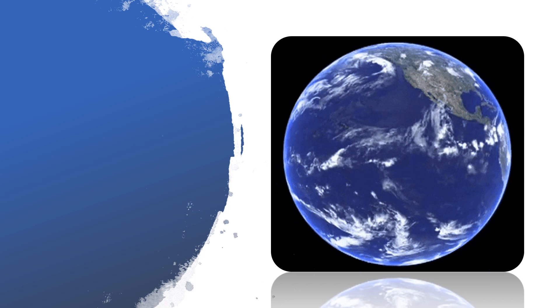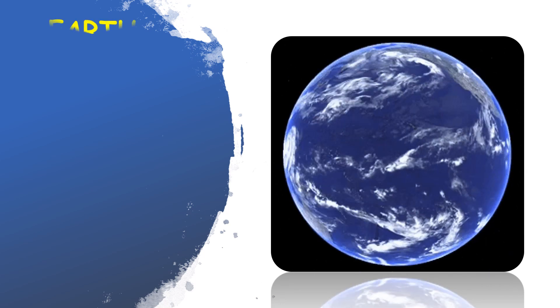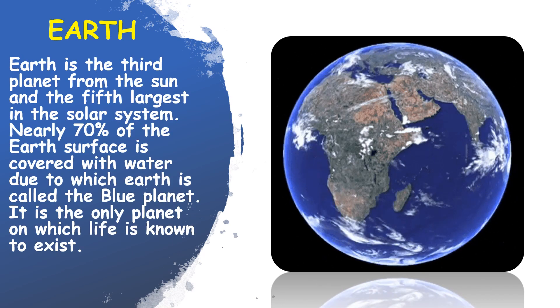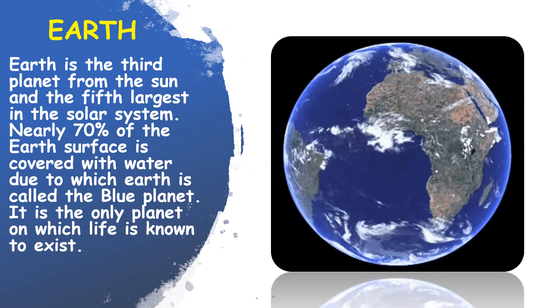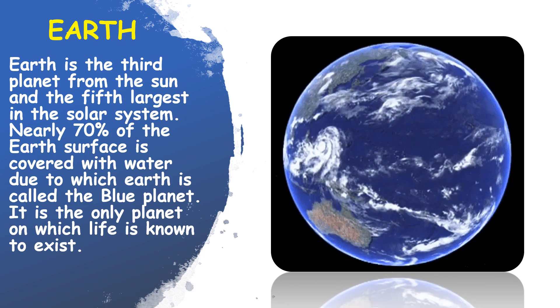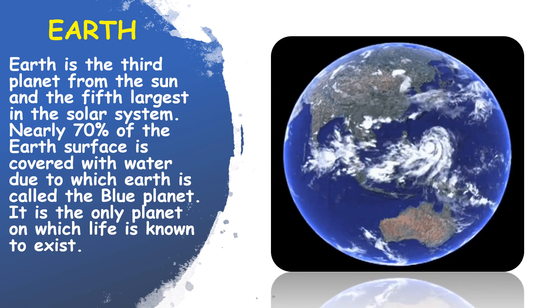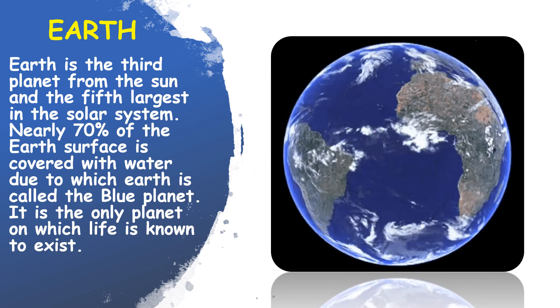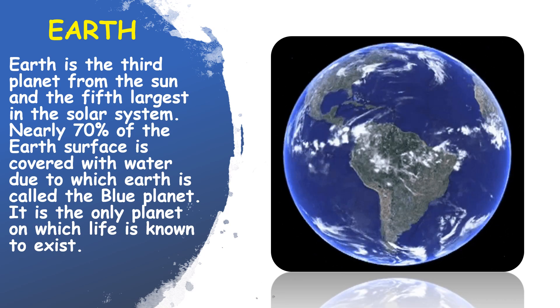Okay, children, can you tell me which planet is this? Yes, you are right. That is our Earth. Earth is the third planet from the sun and the fifth largest in the solar system. Nearly 70% of the Earth's surface is covered with water, due to which Earth is called the Blue Planet. It is the only planet on which life is known to exist.